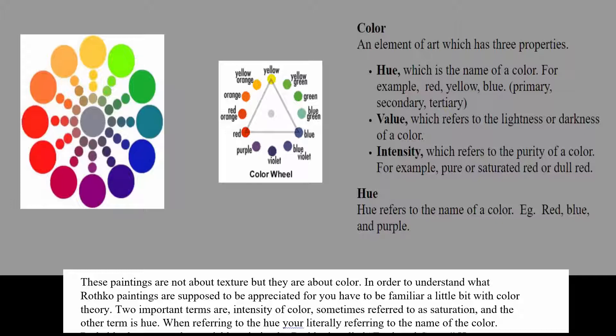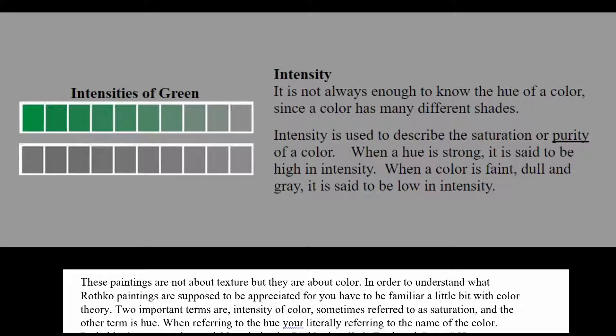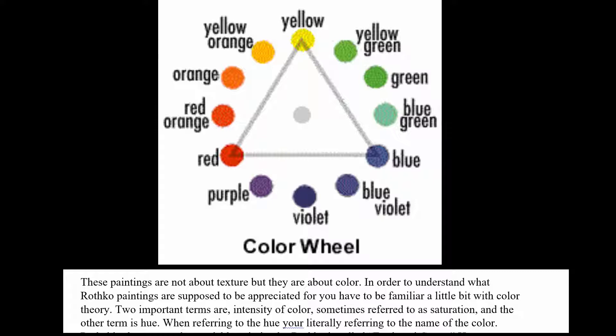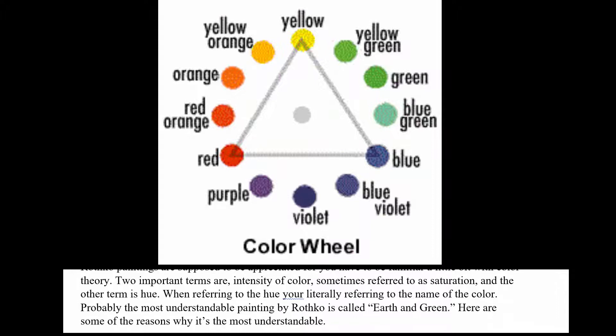Color theory is important and a little confusing — it's almost like algebra because there are two elements to it. You have the purity of the color, sometimes referred to as intensity or saturation, which basically means the color as it looks when you squeeze it straight out of the tube. The other term is the name of the color, which is also called hue — when you refer to a hue, you're literally referring to the name of the color.